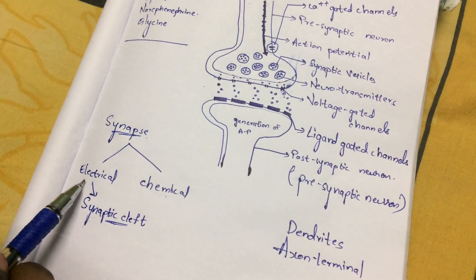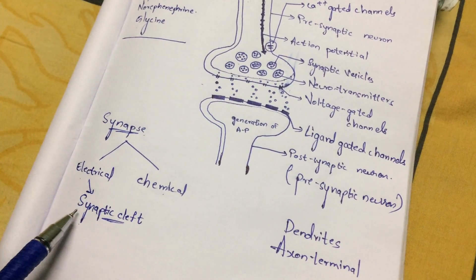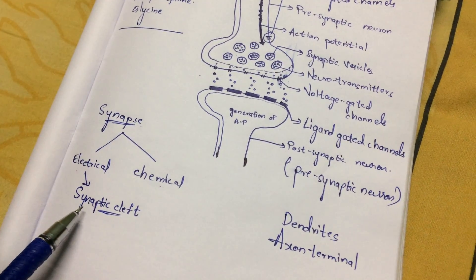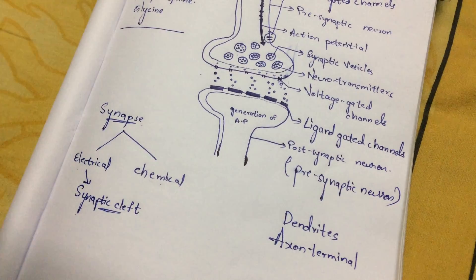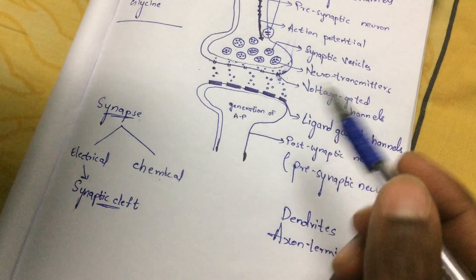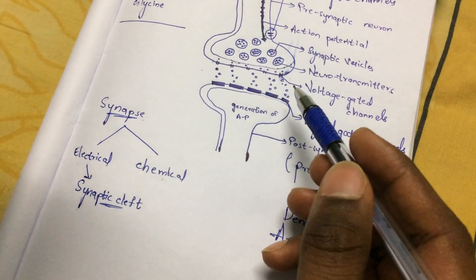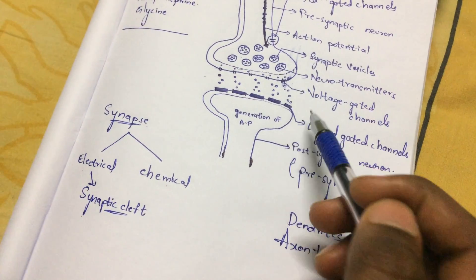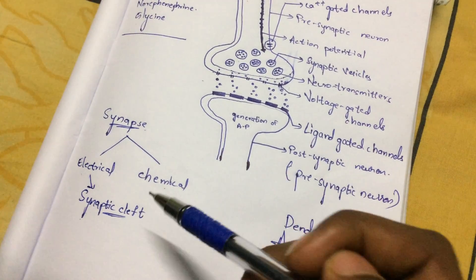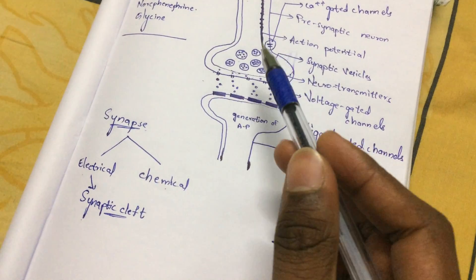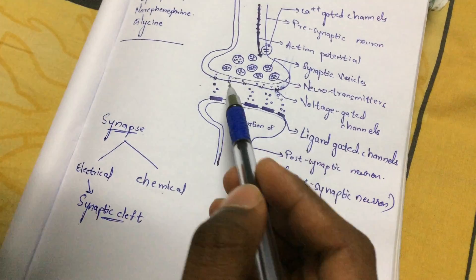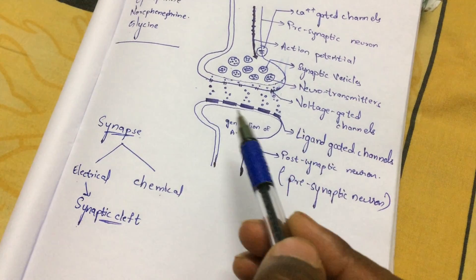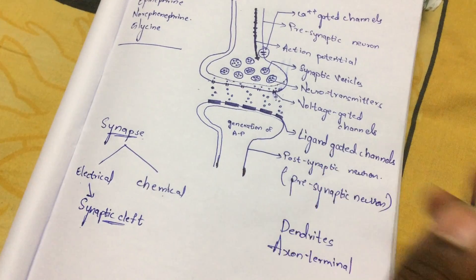If you want to know about electrical synapse, first we have to know about synaptic cleft. Synaptic cleft plays a major role in electrical transmission. Synaptic cleft is mainly present between the presynaptic neuron and postsynaptic neuron. This space between the membrane of the presynaptic neuron and postsynaptic neuron is known as the synaptic cleft.